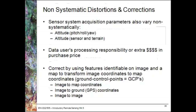Non-systematic distortions and corrections involve parameters that vary non-systematically — they may vary at different points in time. This might be due to variations in platform stability, or variations in altitude of both the sensor and the terrain. Usually when you purchase data it has been processed to correct for these; otherwise you do it yourself, depending on how much you want to spend. Many of these things can be corrected using ground control points — known locations on the Earth — to attribute spatial information to non-spatial data sets.